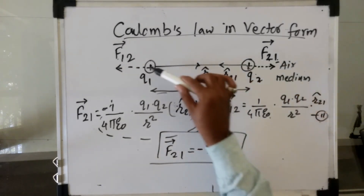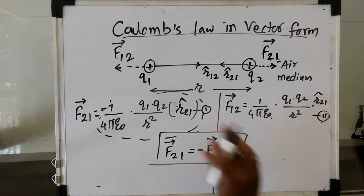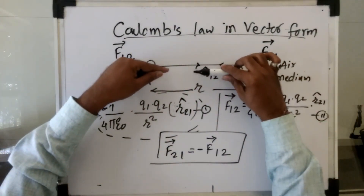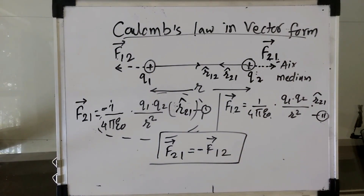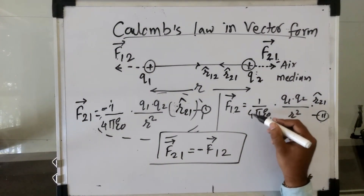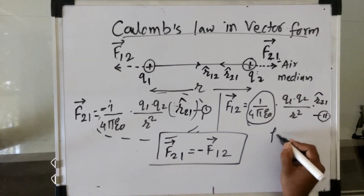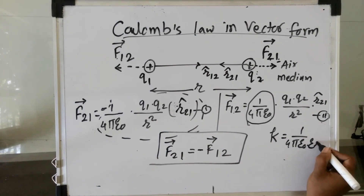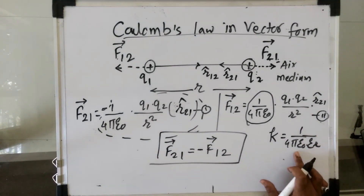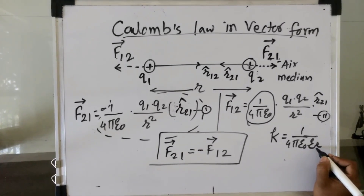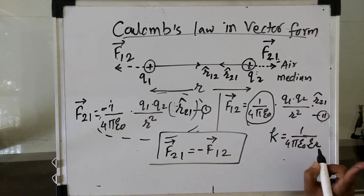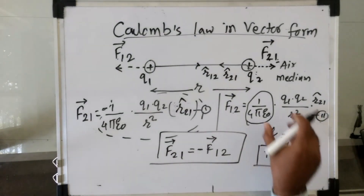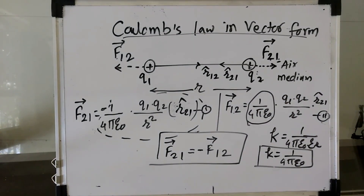If instead of positive charges, the first charge is positive and the second is negative, then there will be a force of attraction and the negative sign will not be present. In some books, instead of 1 / 4πε₀, the constant of proportionality is written as K, where K = 1 / (4πε₀εᵣ), and εᵣ is the permittivity of the medium while ε₀ is the permittivity of free space. For air medium, εᵣ = 1, so K = 1 / 4πε₀.